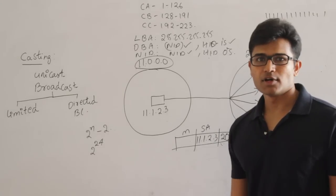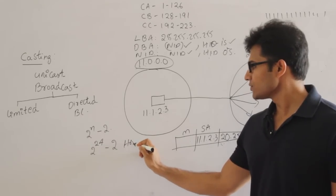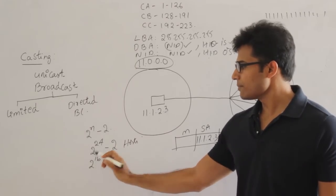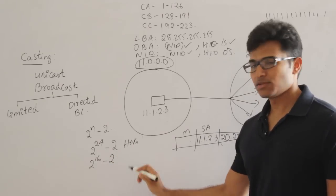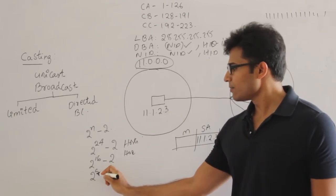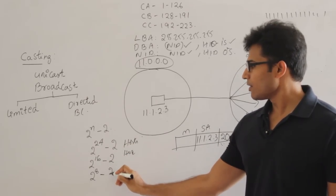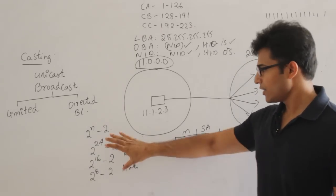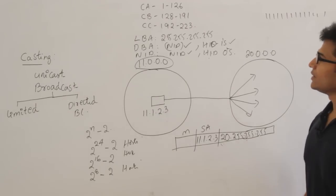In Class A, even though there are 2^24 IP addresses per network, only 2^24 minus 2 hosts can be configured. In Class B, only 2^16 minus 2 hosts per network. In Class C, only 2^8 minus 2 hosts per network. In exams, be clear about whether the question asks for the number of IP addresses or the number of configurable hosts.